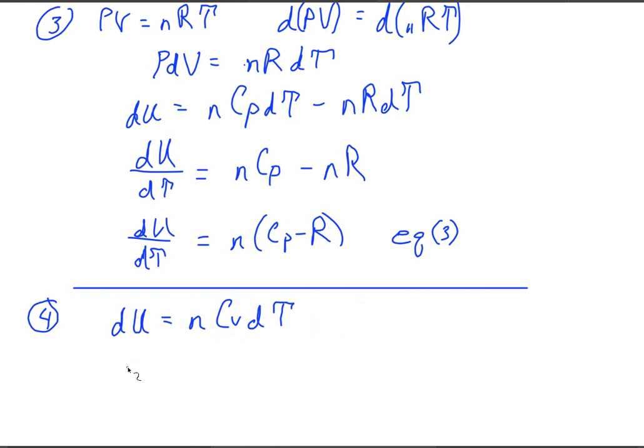Now let's do the same thing that we did in step three and divide through by dT. So we'll have dU over dT is equal to nCv.